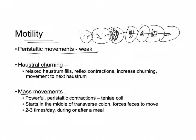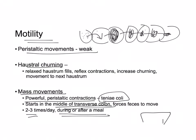Mass movements occur two to three times a day, usually after or during a meal. They are more powerful peristaltic contractions driven by the teniae coli. They begin in the middle of the transverse colon and force feces across the transverse colon and down the descending colon, hopefully stimulating a bowel movement.